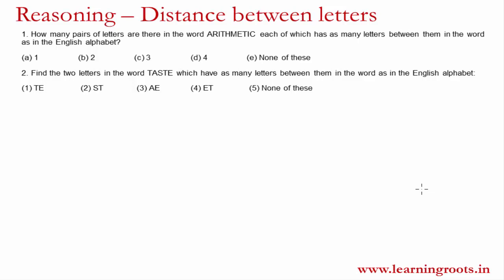The question states that how many pairs of letters are there in the word arithmetic each of which has as many letters between them in the word as in the English alphabet. So there should be a pair of letters and they should have as many letters between them as is there in the English alphabet. So if A and E is present in that word then in the English alphabet you have B, C and D in between A and E. So three letters should be present in that word as well. Something on those lines.